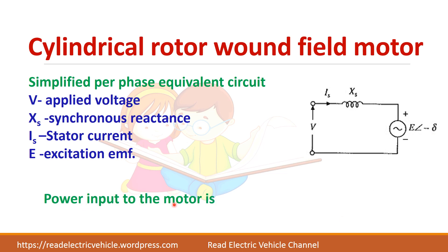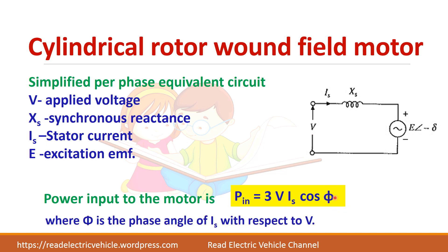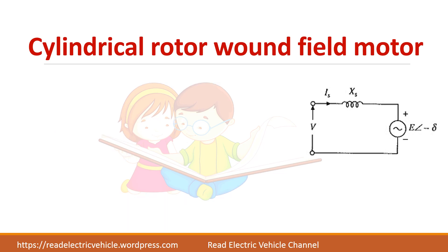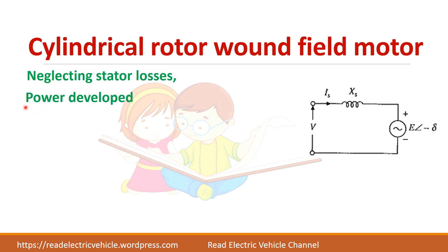The input to the motor — since this is an AC circuit, the formula for power is VI cos phi. So the input power is equal to 3V × Is × cos phi, where phi is the phase angle between Is and V. Assuming there are no stator losses, the power developed is also equal to 3V × Is × cos phi.